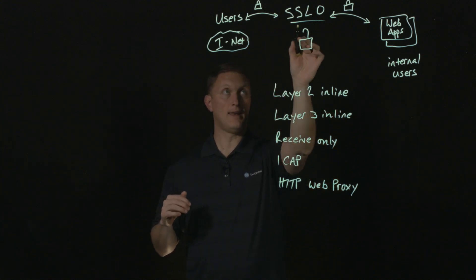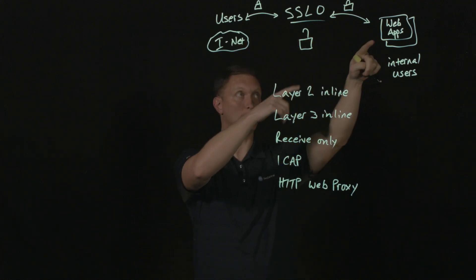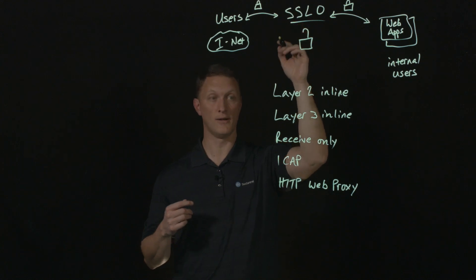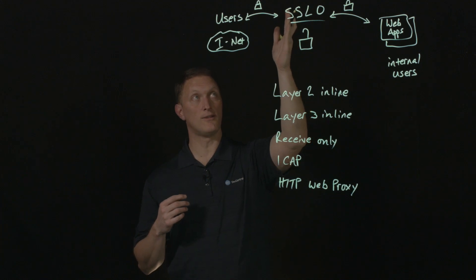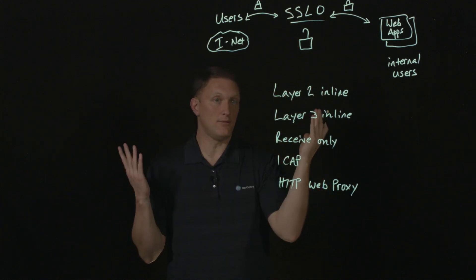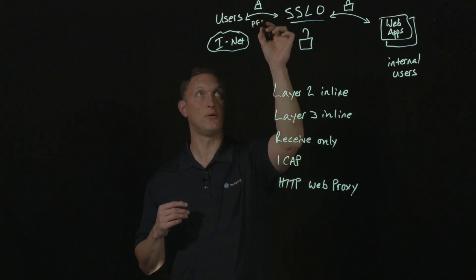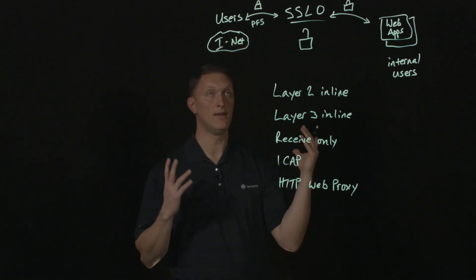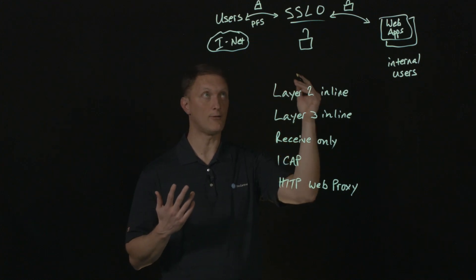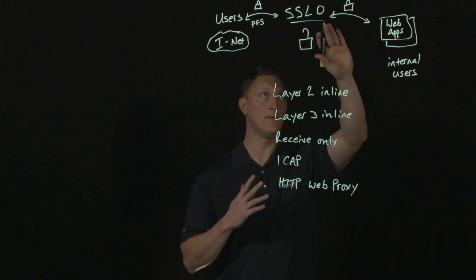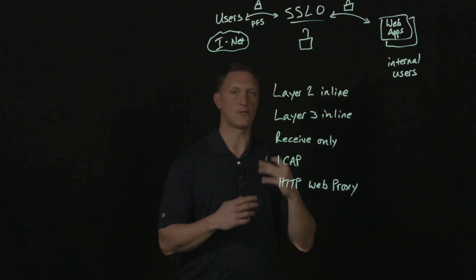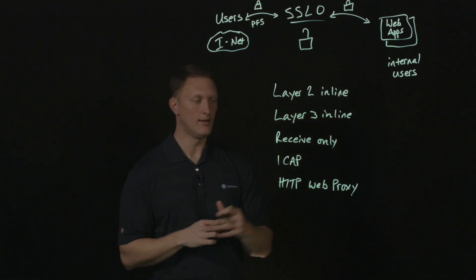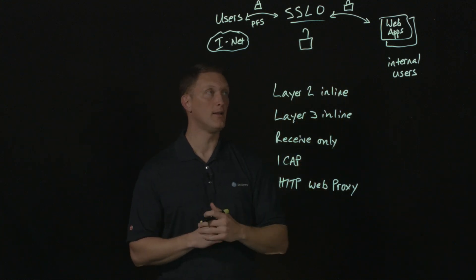A user connects into the SSL Orchestrator — for example, an inbound user coming to one of your web applications. The cipher negotiation between the user and SSL Orchestrator can be whatever you need it to be. The outward-facing cipher suite could be whatever you want — for example, if you're concerned with perfect forward secrecy, you can offer perfect-forward-secrecy-capable ciphers. As TLS 1.3 comes online and those ciphers are mandated, you can configure that on the SSL Orchestrator. The back-end can use a completely separate set of ciphers, so there's a lot of cipher diversity and flexibility here.